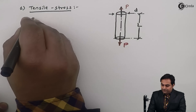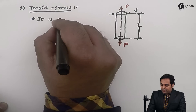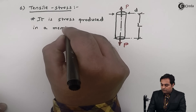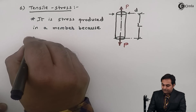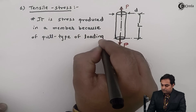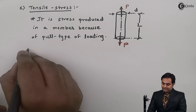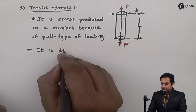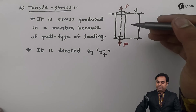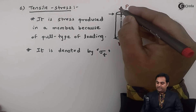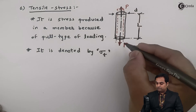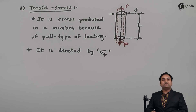The stress which is developed in the material is called tensile stress. Tensile stress is the stress produced in a member because of pull type of loading. It is denoted by sigma_t, where t is the suffix indicating tensile stress. Tensile stress results in a pulling action, which reduces the diameter and increases the length of the member.